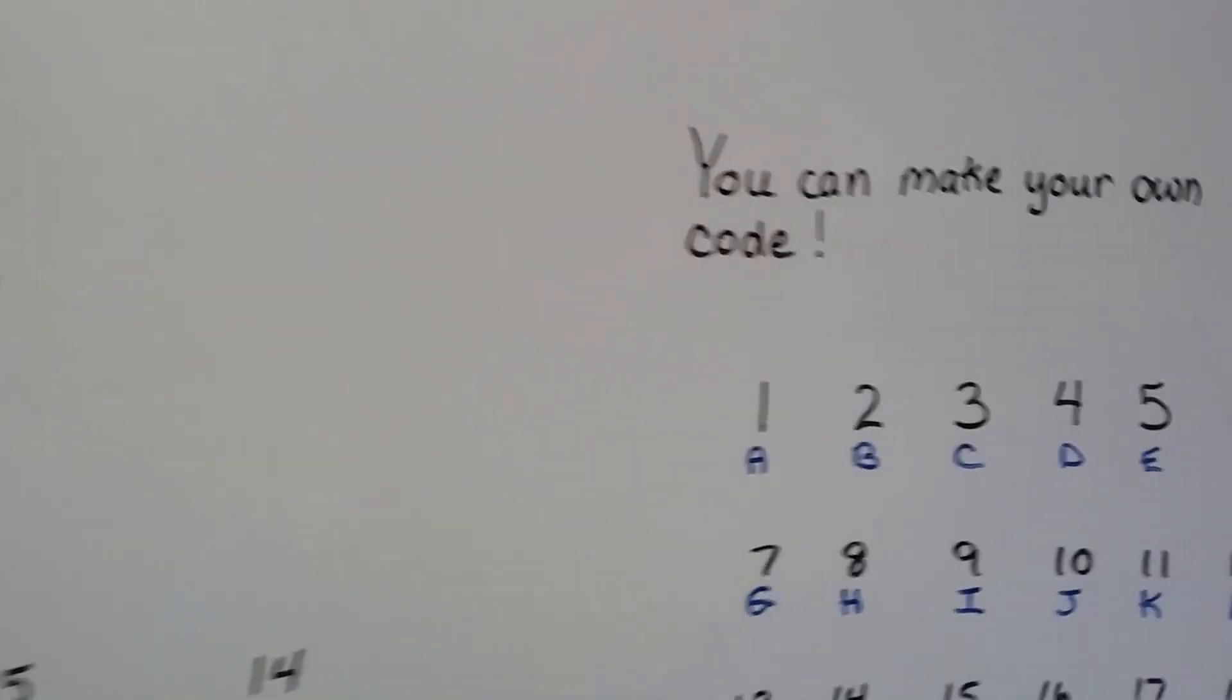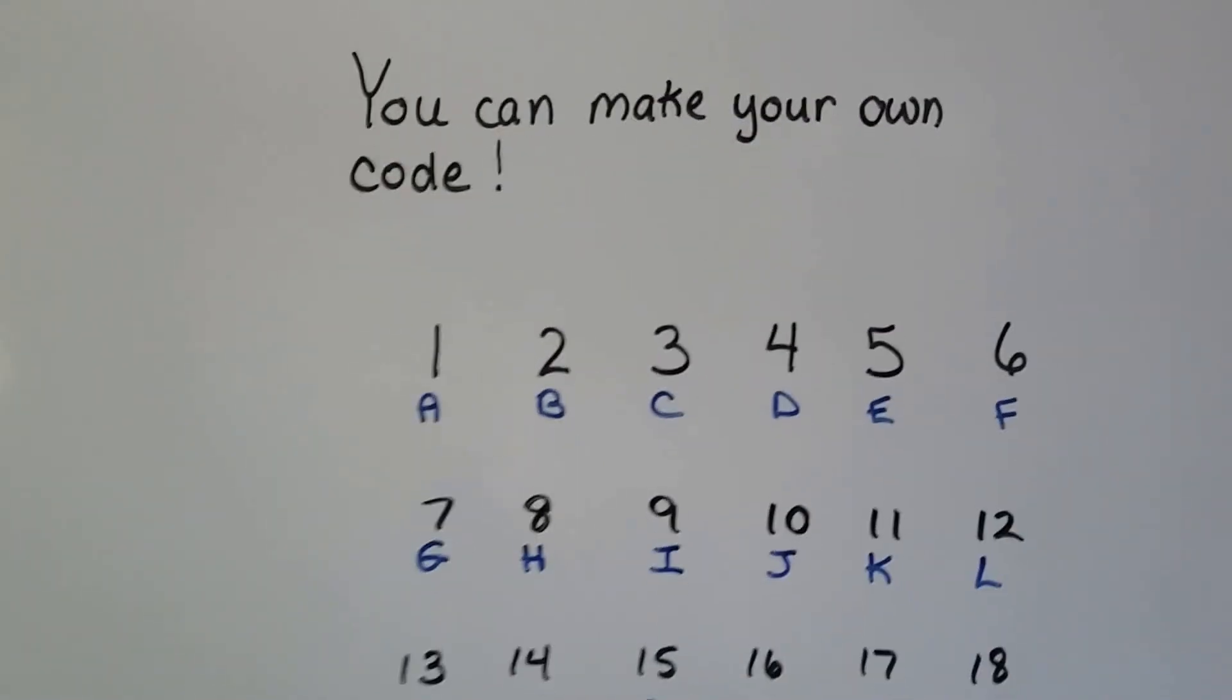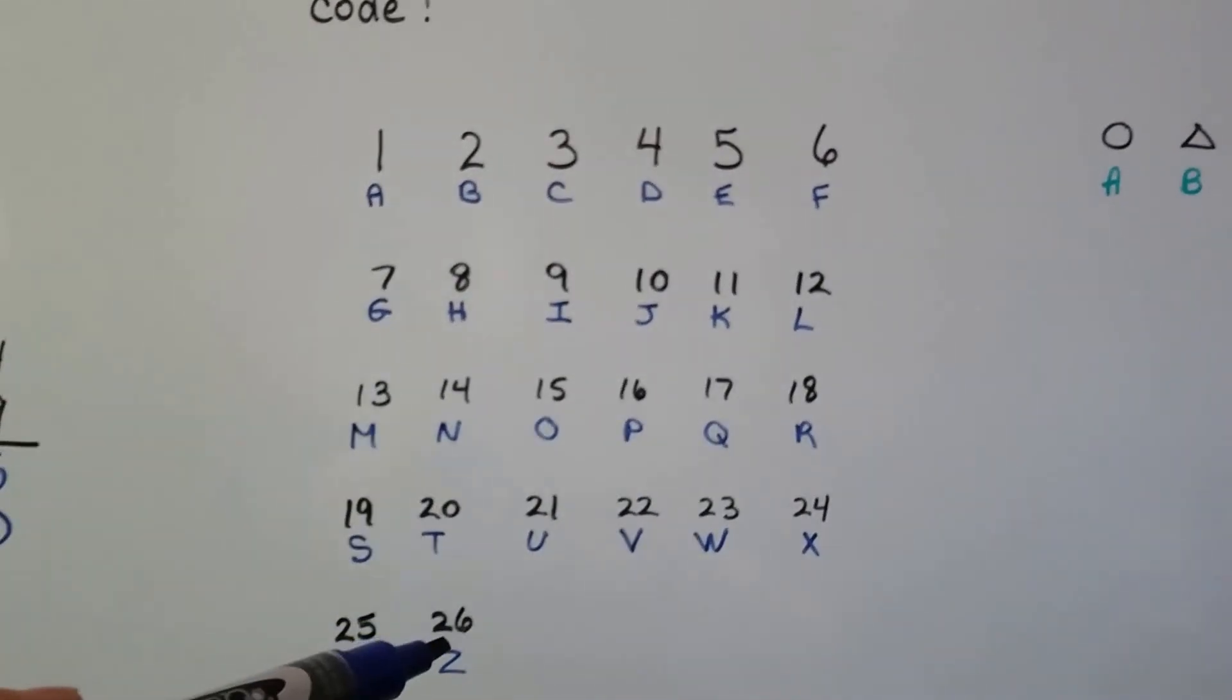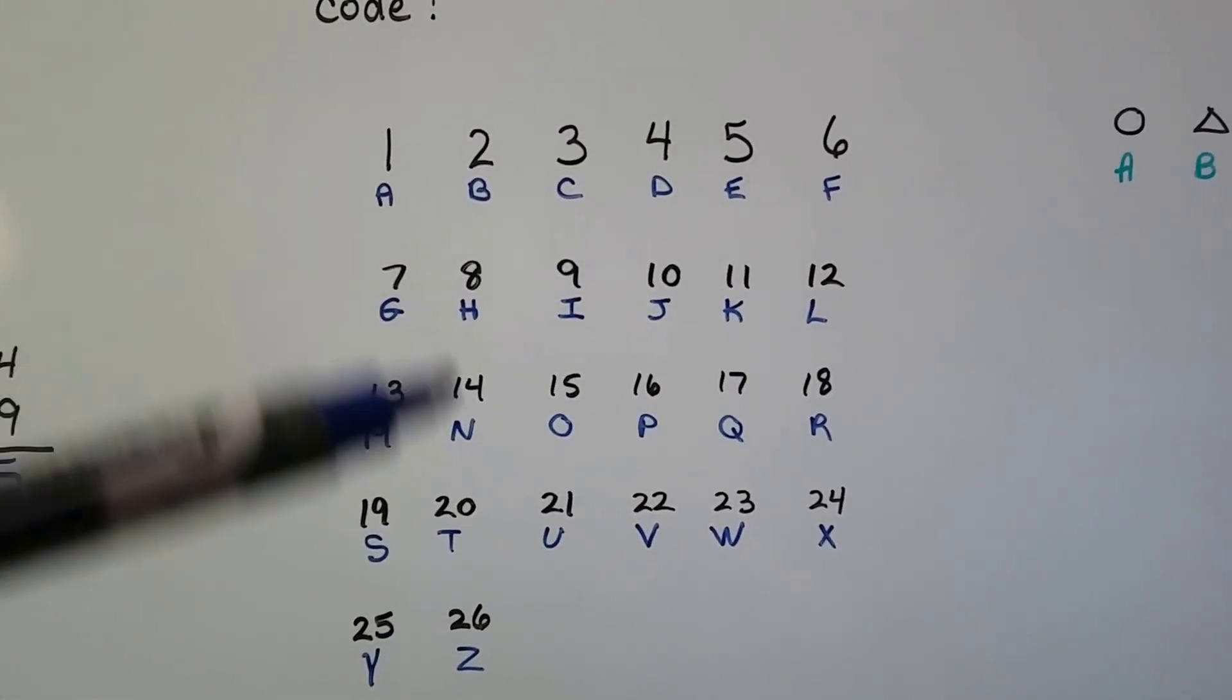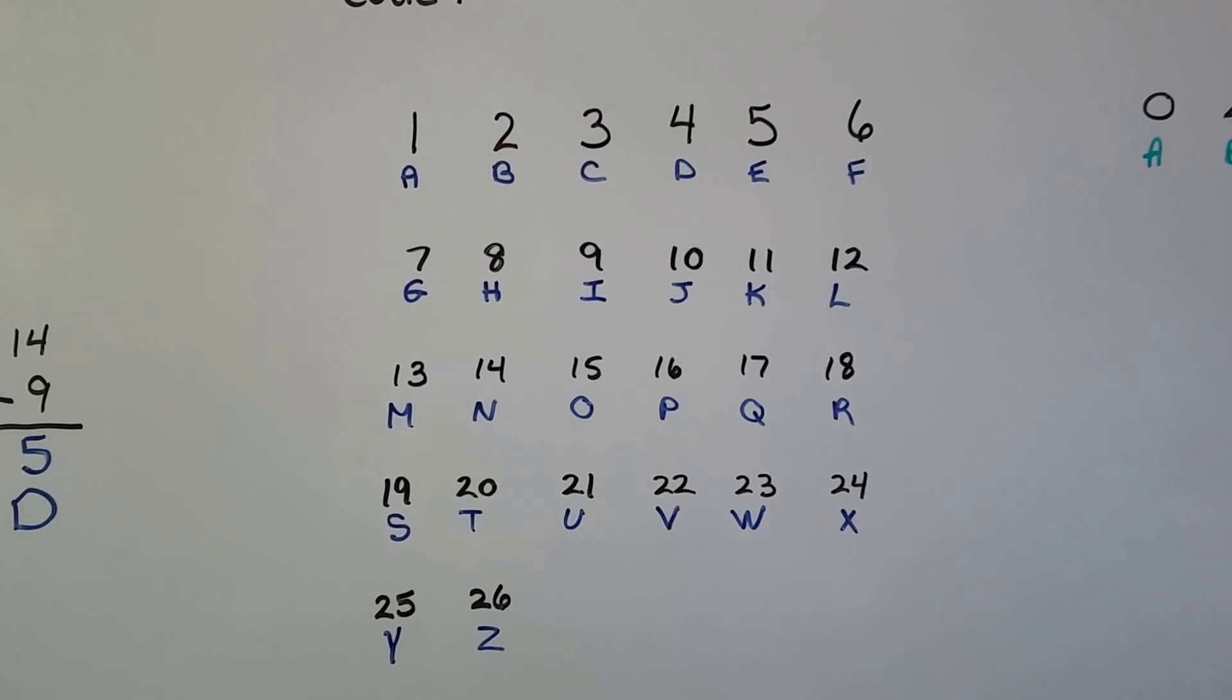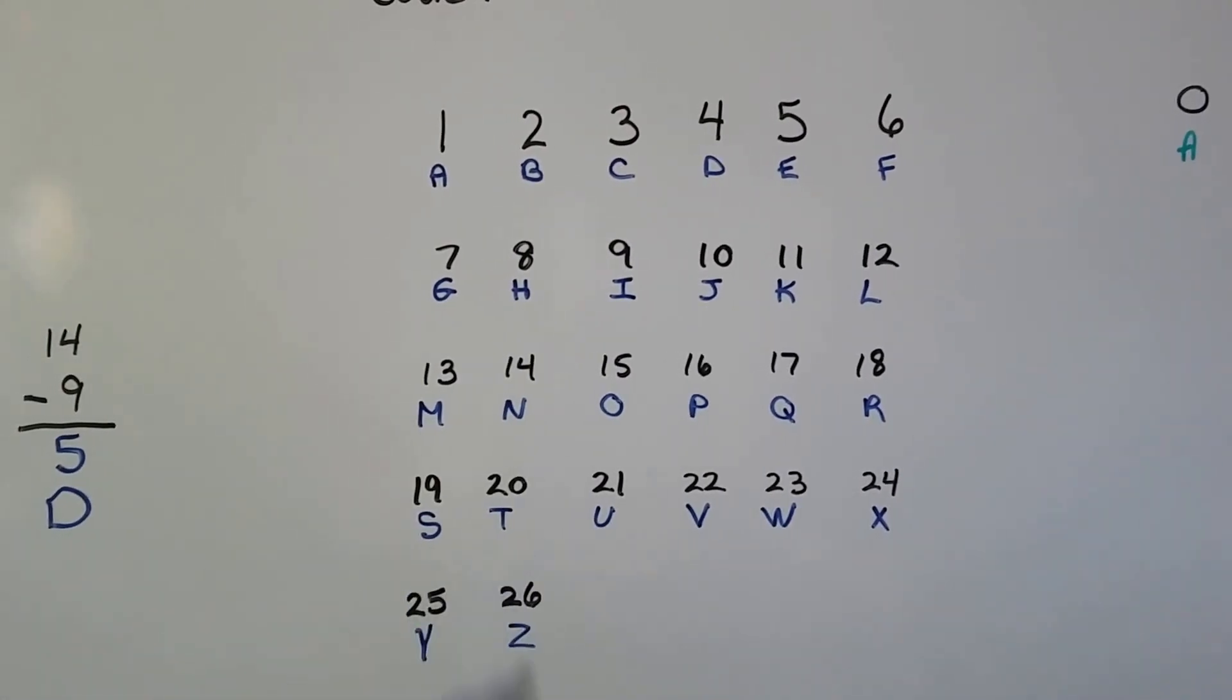Now you can make your own code. You could do something like this. You can write all the letters of the alphabet and give them a number. There's 26 letters in the alphabet, so you'd go from 1 to 26.